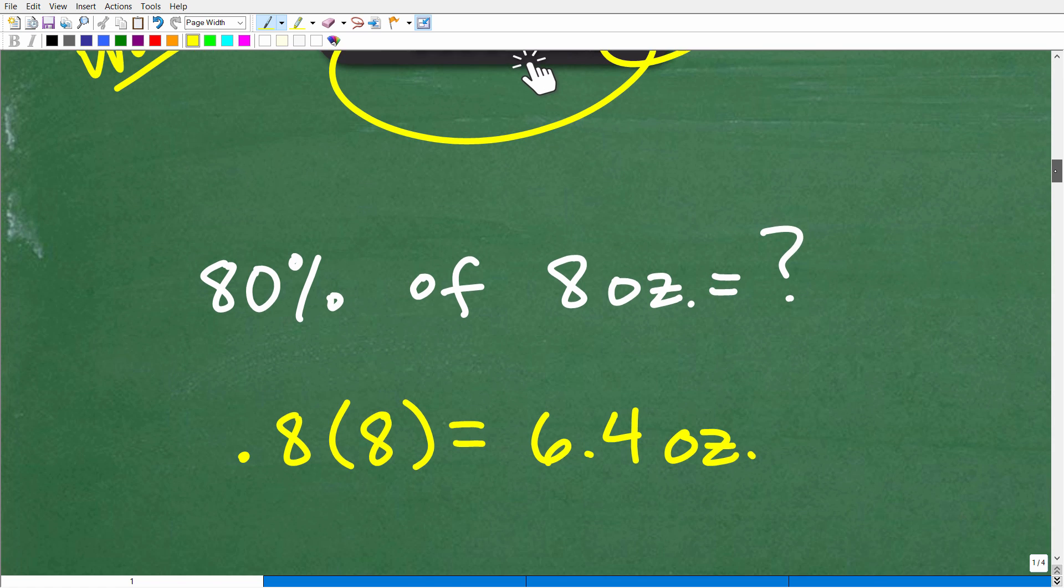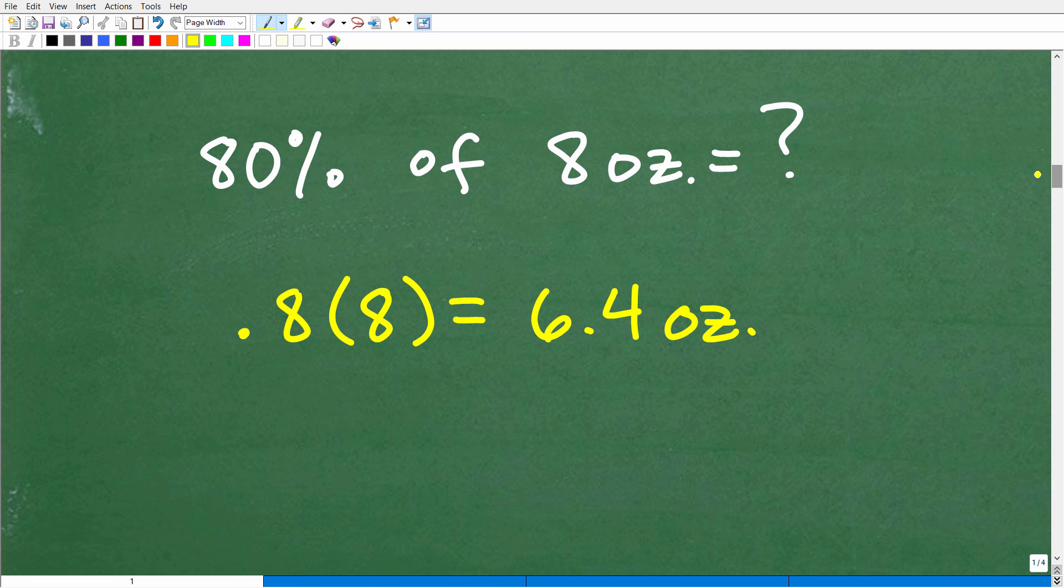All right. So let's go ahead and finish up this problem. This is not that difficult once we understand the setup. Right. Okay, so what we want to do is find 80 percent of eight ounces. So how do we find a percent of a number? Well, pretty easy. What we need to do is change that percent to a decimal. So how do we change 80 percent to a decimal? Well, easy. Just divide by 100.